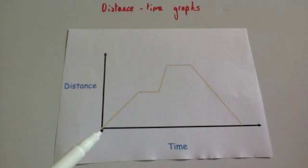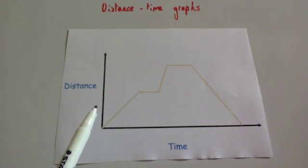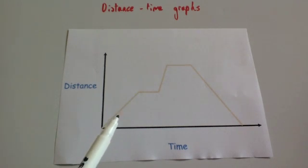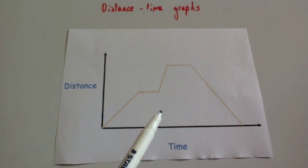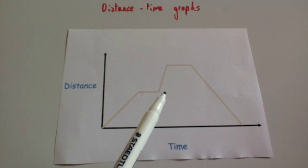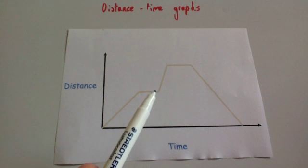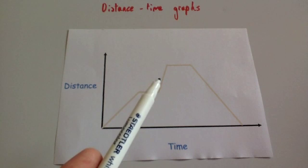So here we've got a journey. This journey shows something that is moving away from a starting point at a steady speed to begin with, because as time increases so does the distance from the starting point. As it moves away in a straight diagonal line, that means it is at a steady speed. Then it's horizontal — that means it's stationary — as time is increasing the distance is remaining the same. Then as time increases again the distance increases, but this time at a steeper rate. This steeper section means it's moving away at a faster speed.